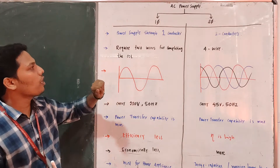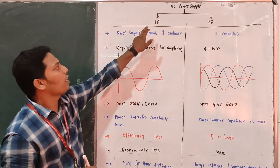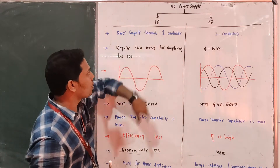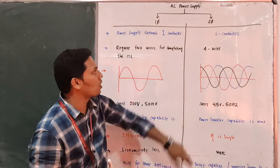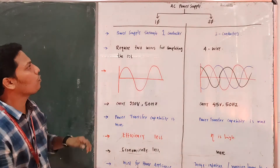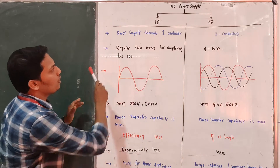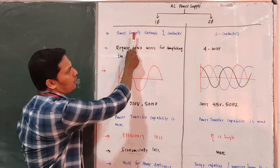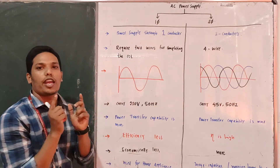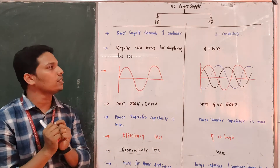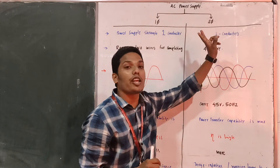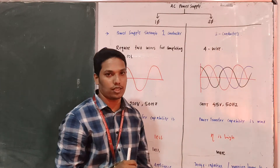So the important points are — here I am comparing single phase and three phase. This is for single phase and this is for three phase. The first point: for a single phase system, the power is supplied through one conductor, meaning only one phase. But in three phase, there are three conductors, meaning three phase conductors.